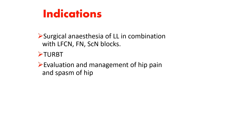In urological surgery, obturator nerve block was selectively given to suppress the obturator reflex during transurethral resection of bladder tumors of the lateral wall, wherein direct stimulation of the obturator nerve by the resector scope — as it passes in close proximity to the bladder wall — results in sudden violent adductor muscle spasm, which is not abolished by spinal anesthesia.